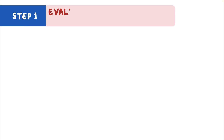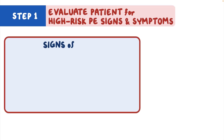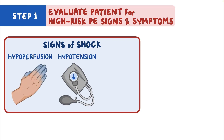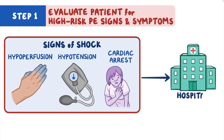Step 1: Evaluate the patient for high-risk PE signs and symptoms for poor outcomes, which include signs of shock, end-organ damage, or hypoperfusion, hypotension, or cardiac arrest. If any of these are present, the patient should be hospitalized.